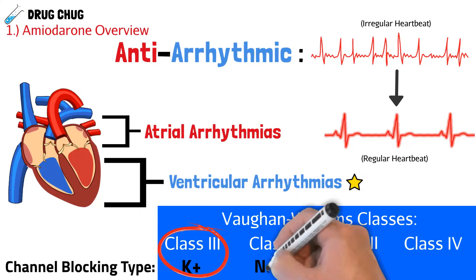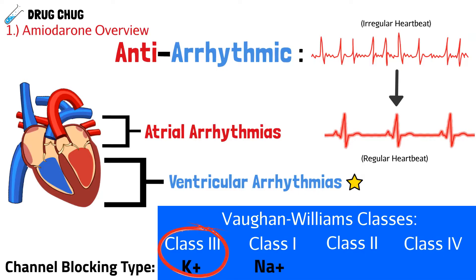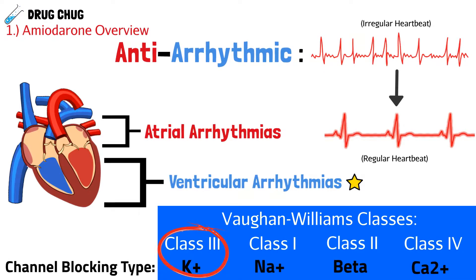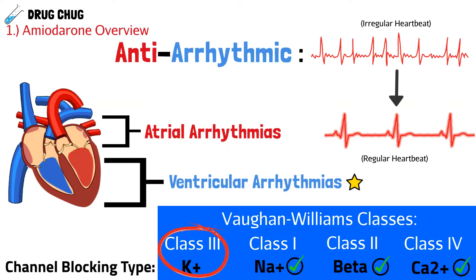There's also class one, which blocks sodium channels; class two, which blocks the beta receptor; and then class four, which blocks calcium channels. So even though amiodarone is technically a class three, it actually blocks every single type of channel — potassium, sodium, beta, and calcium channels. And because it can do all of these things, it's actually a very popular antiarrhythmic, and that's why we see it used both in the hospital and in the community.